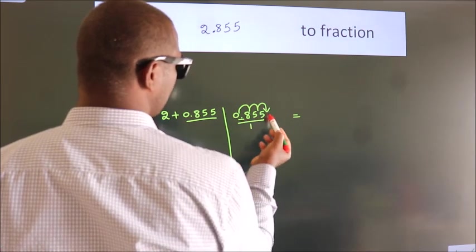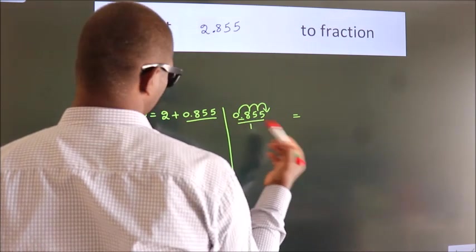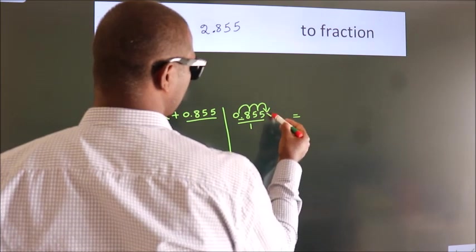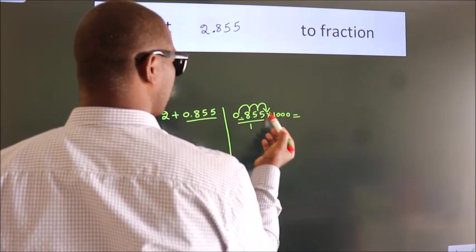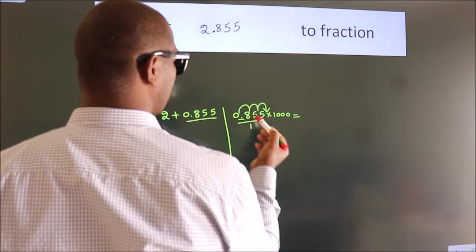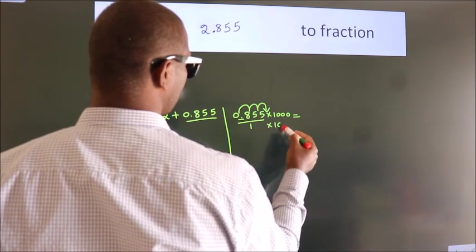To move this decimal after 3 numbers, we have to multiply it with 1000. Whatever number you are multiplying in the numerator, in the denominator also do the same.